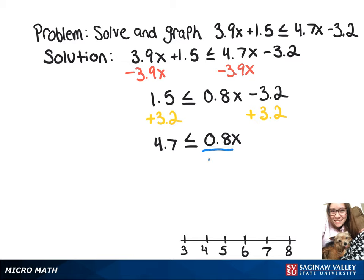Now we're going to divide by that 0.8. As a final answer, if we multiply both those numbers by 10 so we don't have decimals within the fraction, we're going to have 47 over 8 is less than or equal to x.